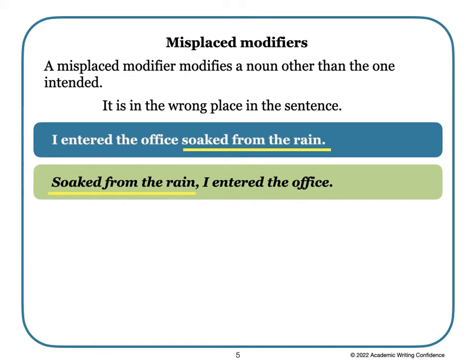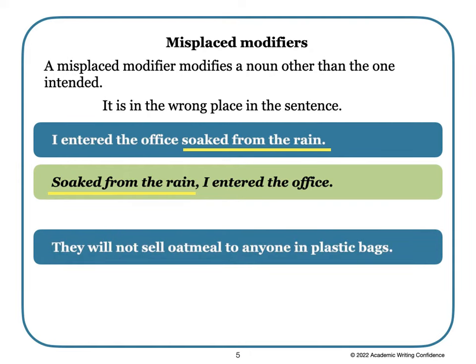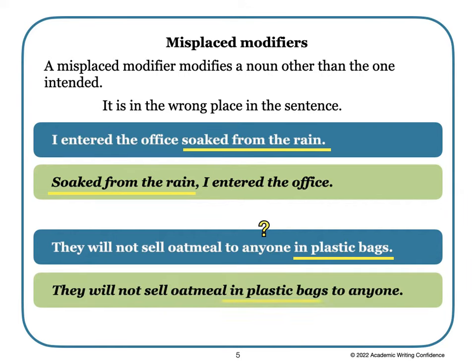Let's look at another sentence: 'They will not sell oatmeal to anyone in plastic bags.' This seems to say that they don't sell to people who are in plastic bags. The phrase 'in plastic bags' is in the wrong place in the sentence. It should be written as: 'They will not sell oatmeal in plastic bags to anyone.' Now it is clear that the oatmeal is in plastic bags, not the people.